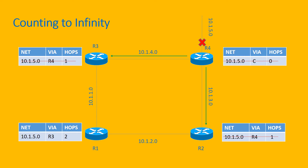Before either Router 3 or Router 2 can send the update to Router 1, Router 1 sends an update to Router 2 saying that it can reach network 10.1.5.0 from two hops away. Router 2 learns about that route and, since it is the best route, it updates its routing table for network 10.1.5.0 with three hops. It then sends the update to Router 4, which updates its routing table for 10.1.5.0 as four hops away.